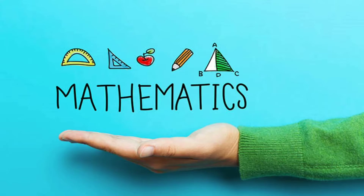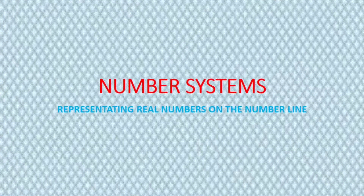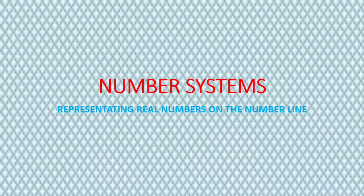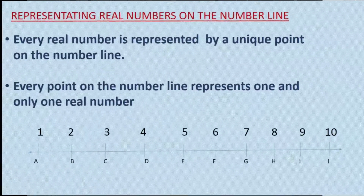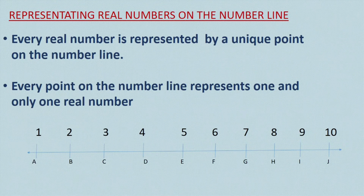Welcome back to our Mathematics session on Number System. In this episode of Number Systems, we are going to discuss representing real numbers on the number line. Every real number is represented by a unique point on the number line, and every point on the number line represents one and only one real number.